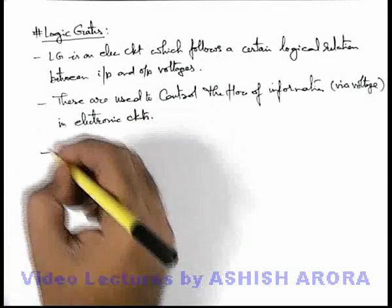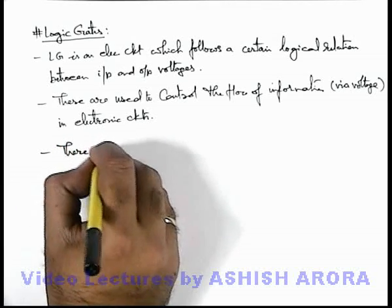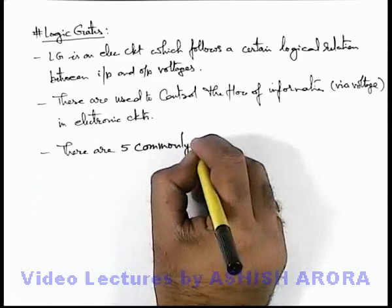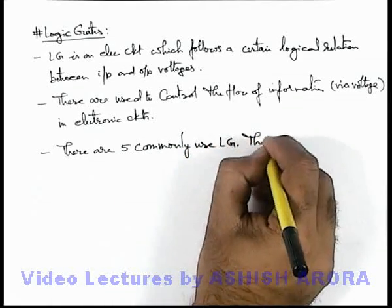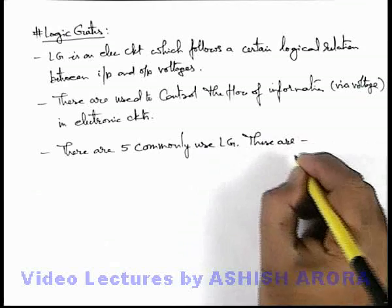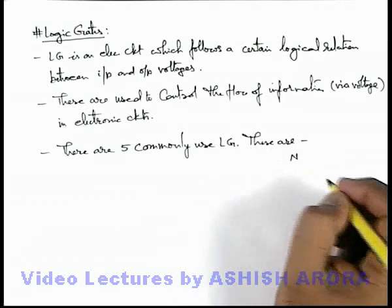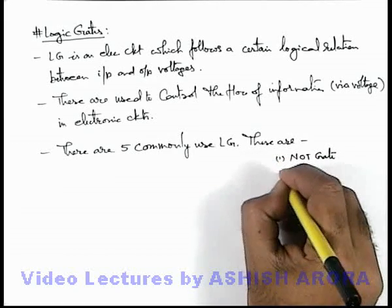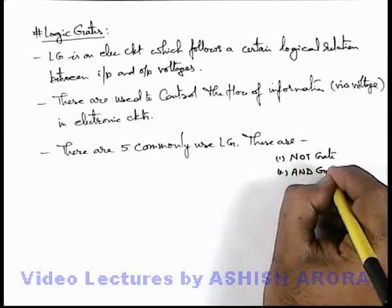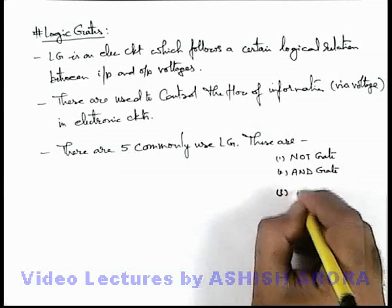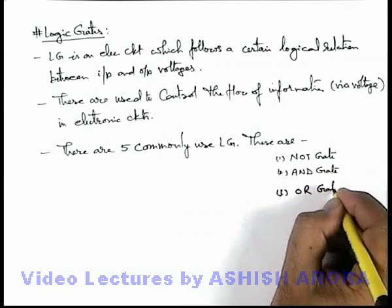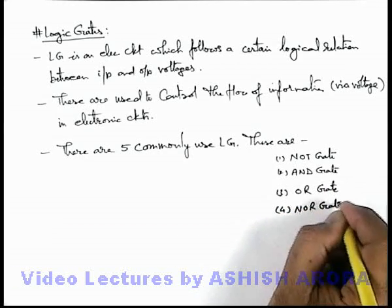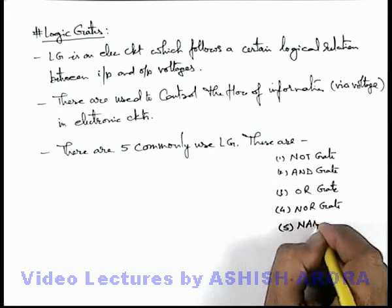About basic logic gates, there are 5 commonly used logic gates. We will study these one by one in detail. These are: NOT gate, AND gate, OR gate, NOR gate, and NAND gate.